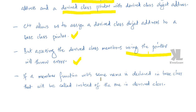If a member function with the same name is declared in the base class, that will be called instead of the one in the derived class. We can declare the same function in the base class and derived class — for something like a display function with the same function name. If a member function with the same name is declared in the base class, that will be called instead of the member function in the derived class.